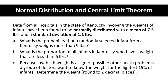Data from all hospitals in the state of Kentucky involving the weights of infants have been found to be normally distributed with a mean of 7.5 pounds and a standard deviation of 1.1 pounds. Whenever we describe a data set we want to talk about its shape, center, and spread. The shape is normal, so it's symmetric with one mound. Because it's symmetric we use the mean to describe the center at 7.5 pounds, and the spread is measured by the standard deviation of 1.1 pounds.